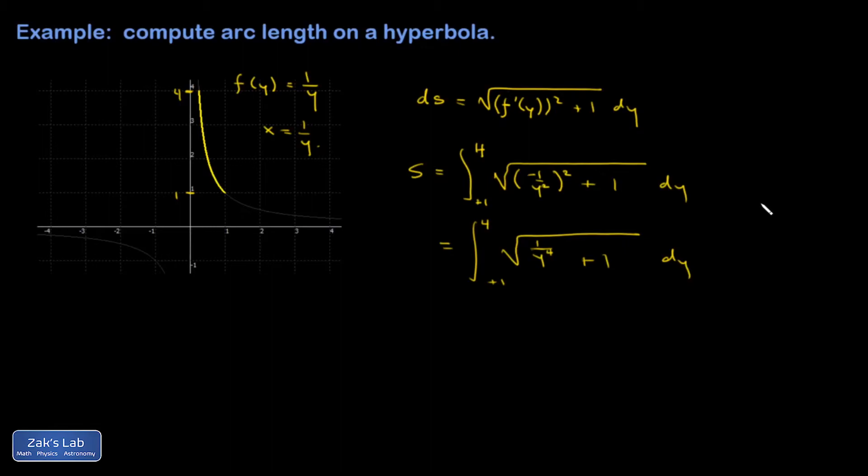Now, these arc length integrals almost always end up having no analytical solution, because the square root of 1 plus the derivative of the function you're looking at is sort of automatically hideous. And you can have a few examples in textbooks that you can do symbolically, but typically it has to be done numerically. So I wanted to illustrate how to do that.